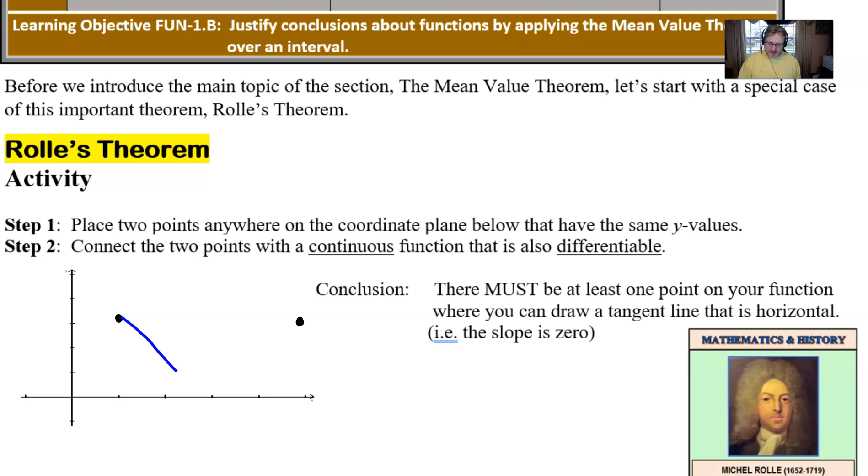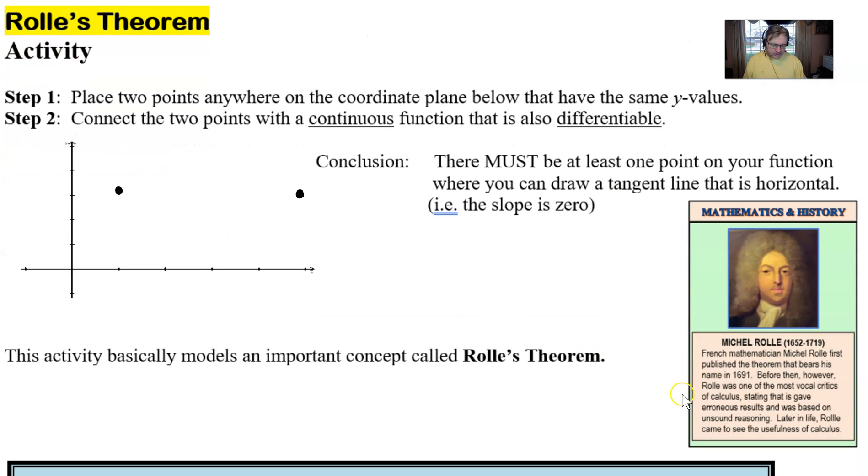So there's your first activity to kind of enter this idea of the mean value theorem. This is a problem that was posed by a French mathematician named Michel Rolle. You can read his biography there. One of the things that I think is interesting about him is that he originally was a very vocal critic of calculus, said that it did not give sound results, but later he came to see the usefulness of calculus. Does that sound like anybody that we might know out there? All right, let's take a look at the formal theorem.